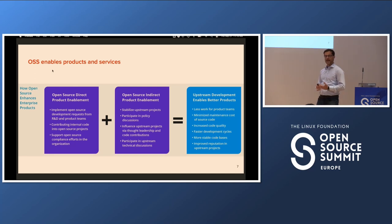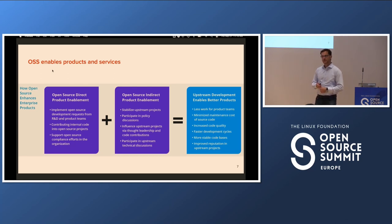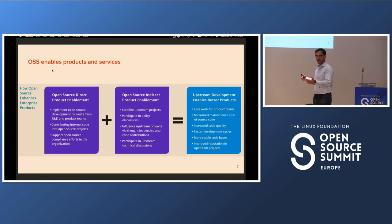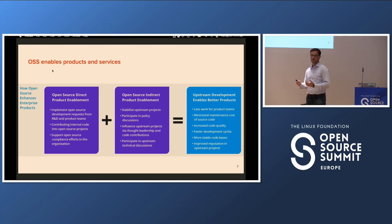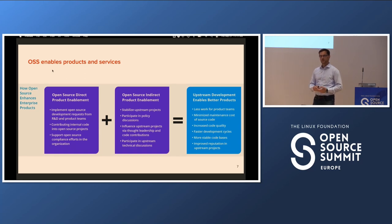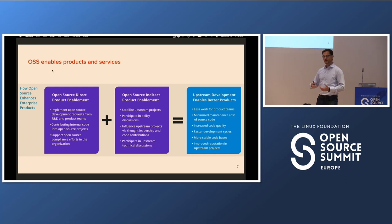There's a lot of enablement that happens with open source. Some of it is direct enablement — something you do and you have immediate results. And some is indirect enablement where, over time, there are indirect advantages that accumulate. The result of all these different enablements is better products, better services, a better relationship with the project communities you depend on, and in some cases better relationships with your customers as well, especially when they have access to the code bases used in deployments.